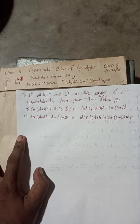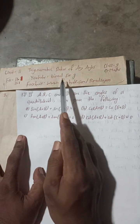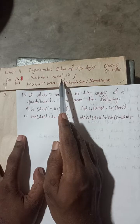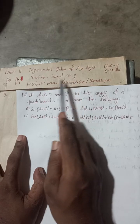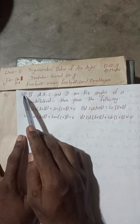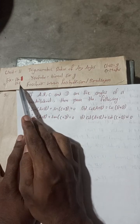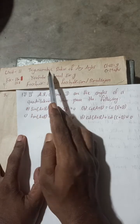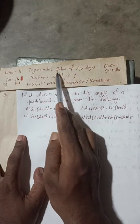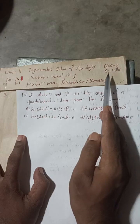Radhe Radhe, Jaya Sri Krishna. Class 9 and 10 students, welcome back to Bhimalsarji YouTube channel. This is question number 12 of exercise 11.1, Unit 11, Trigonometric Ratios of Any Angles, Class 9 Optional Maths.